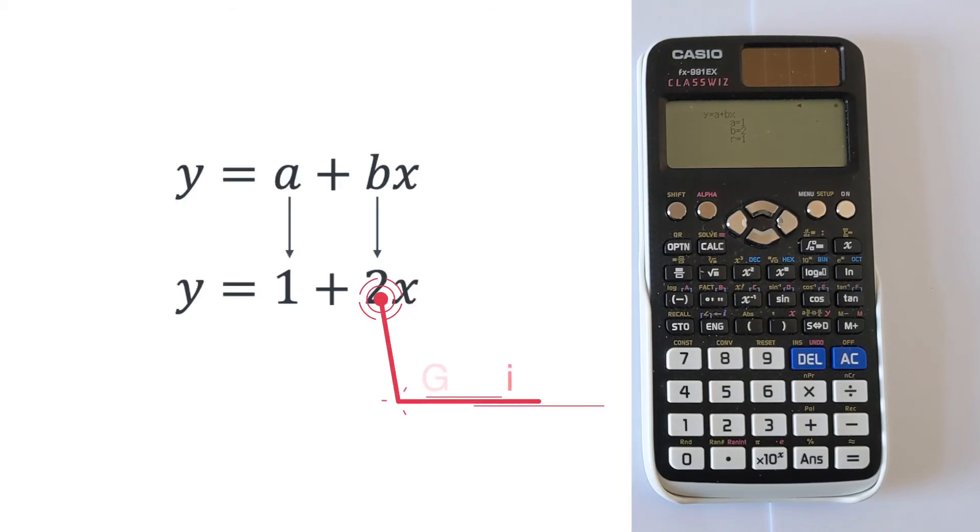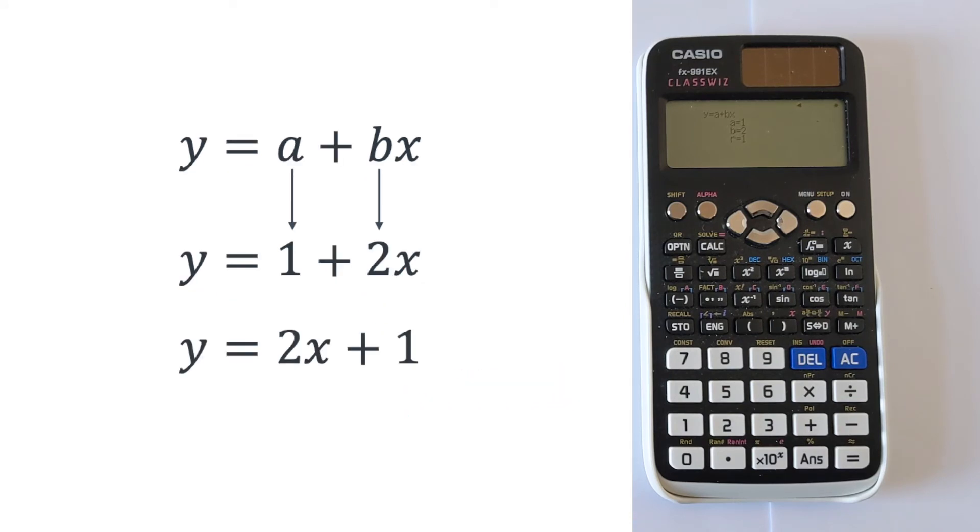Your b value is your gradient. And if you switch the equation round, you get y equals 2x plus 1, which is the answer.